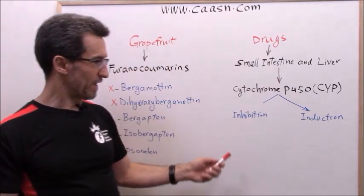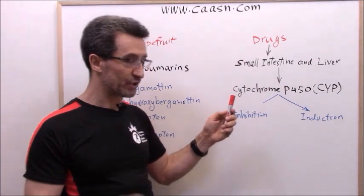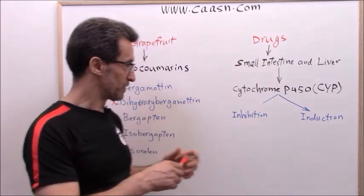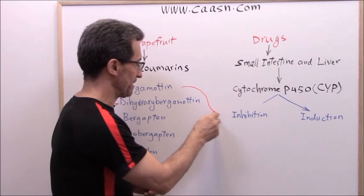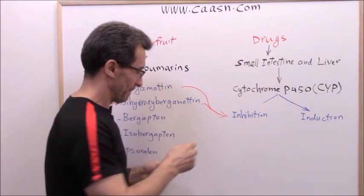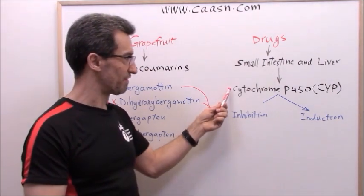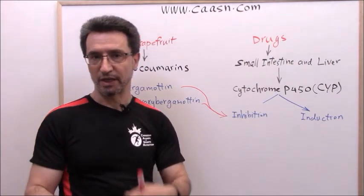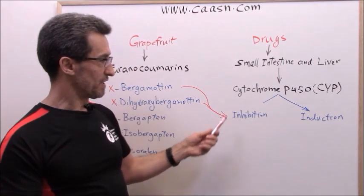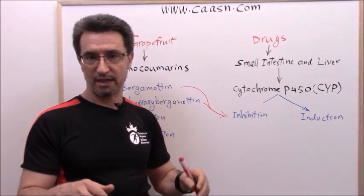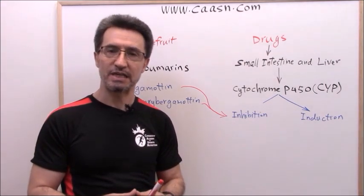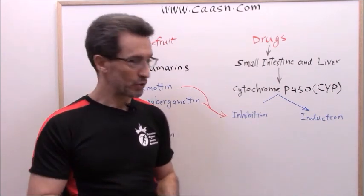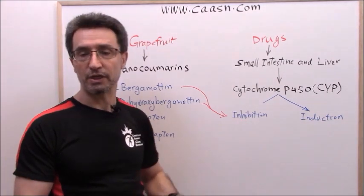On the other hand, some dietary factors decrease the activity of this enzyme. Grapefruit is here — bergamotin and dehydroxybergamotin decrease the activity of this enzyme. So when you have grapefruit with certain medications, because the activity of this enzyme has been decreased, the medication stays in the body longer. There is a possibility of overdose. Grapefruit causes enzyme inhibition.